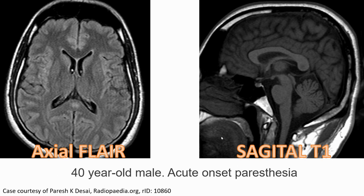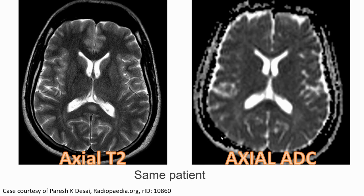This is an image of a 4-year-old man with acute-onset paresthesia. On the first image — axial FLAIR — we can find hyperintensity in the splenium. On the sagittal T1, we see very subtle hypointensity in the splenium. On axial T2, we can find hyperintensity in the splenium. On axial ADC, we also see hyperintensity in the splenium.